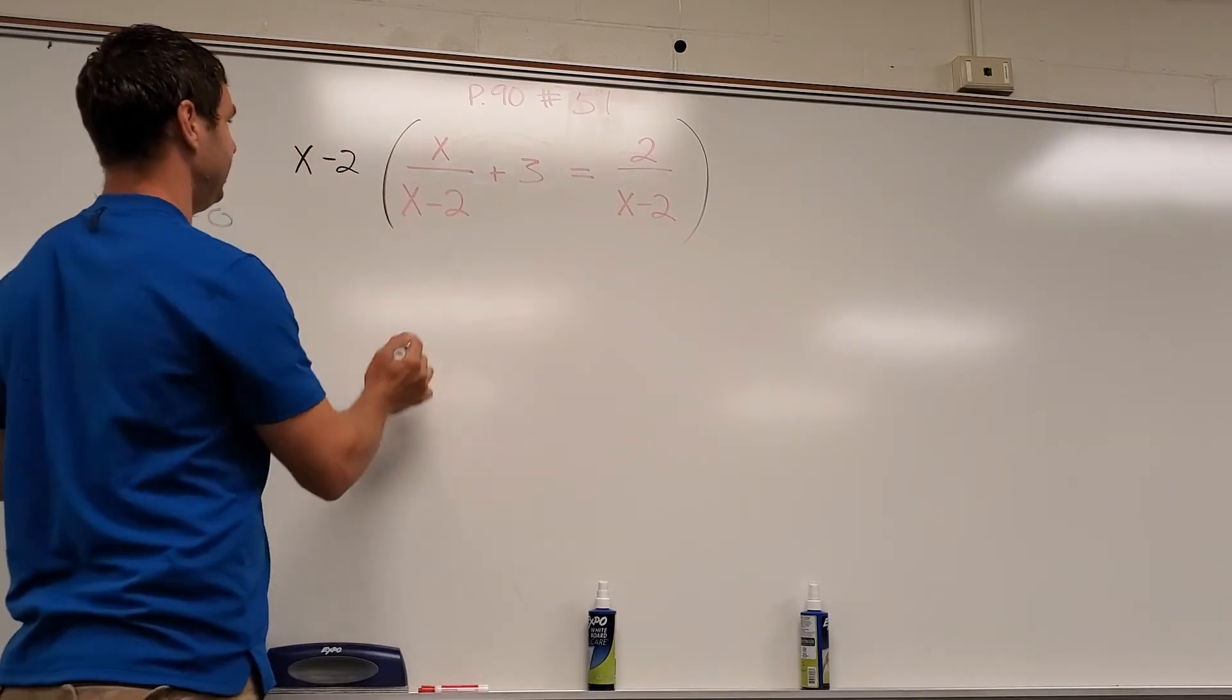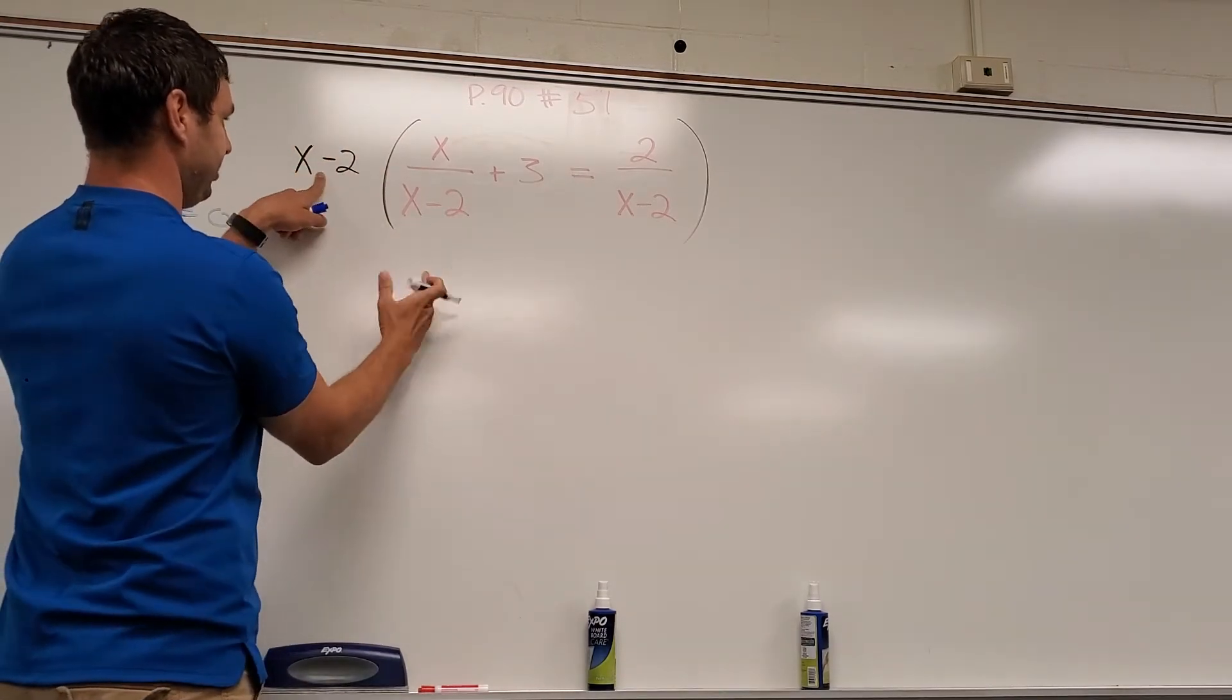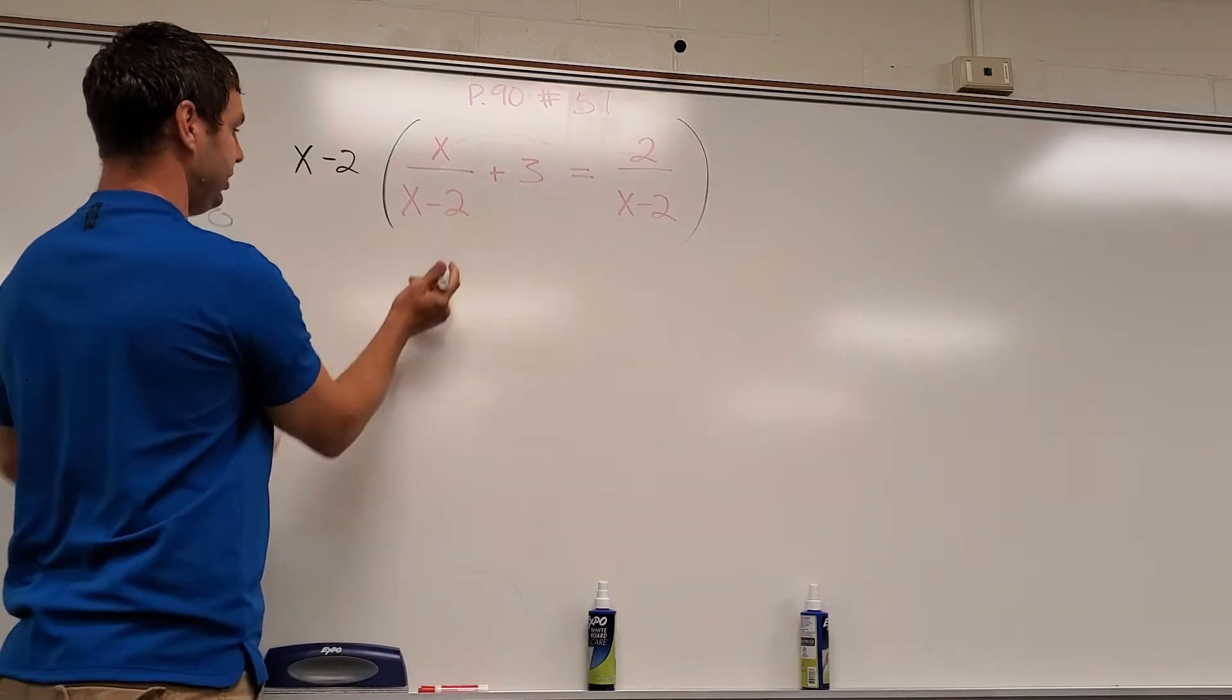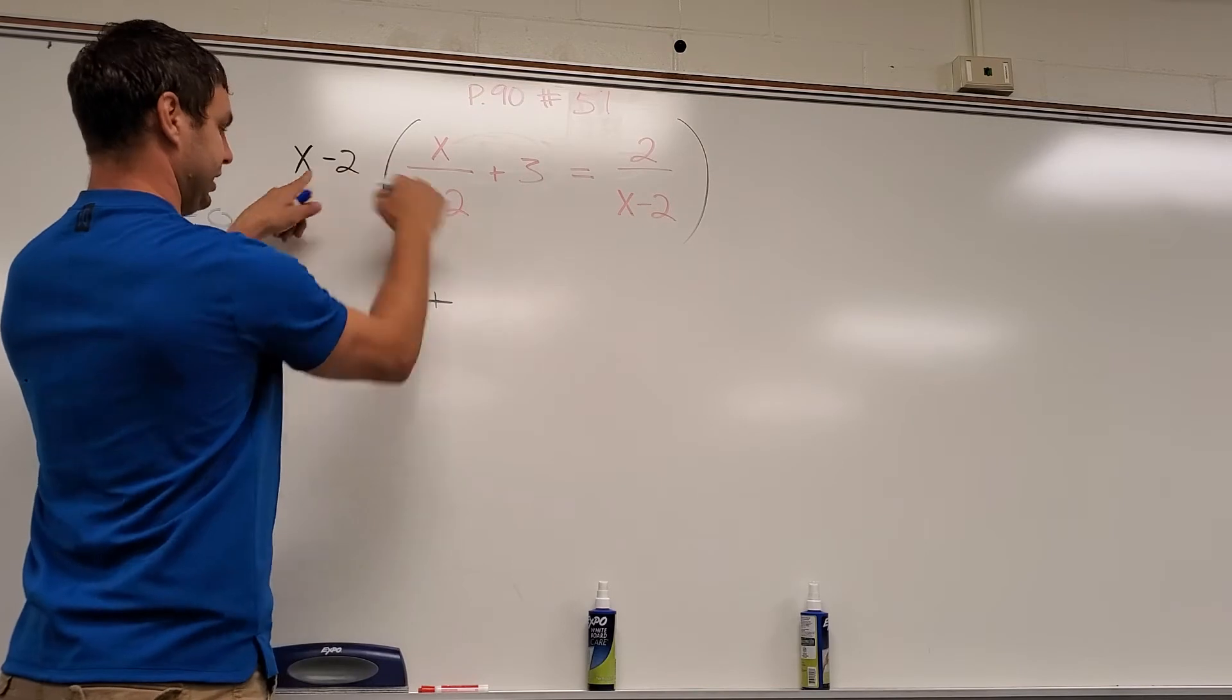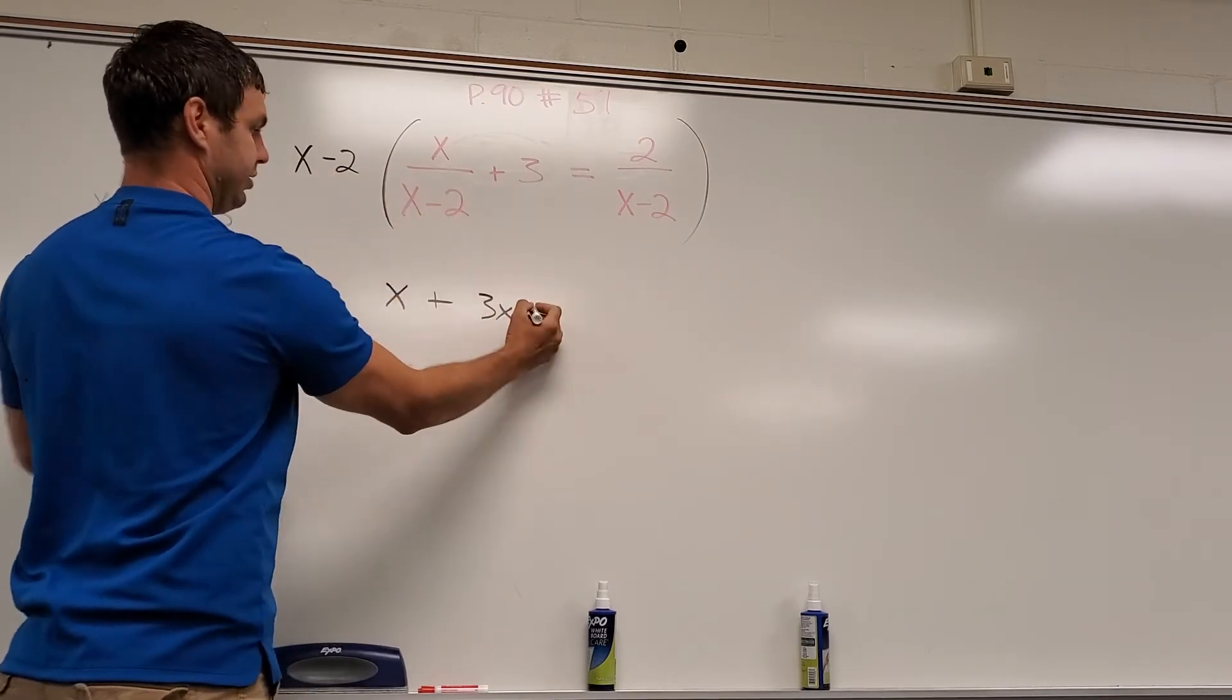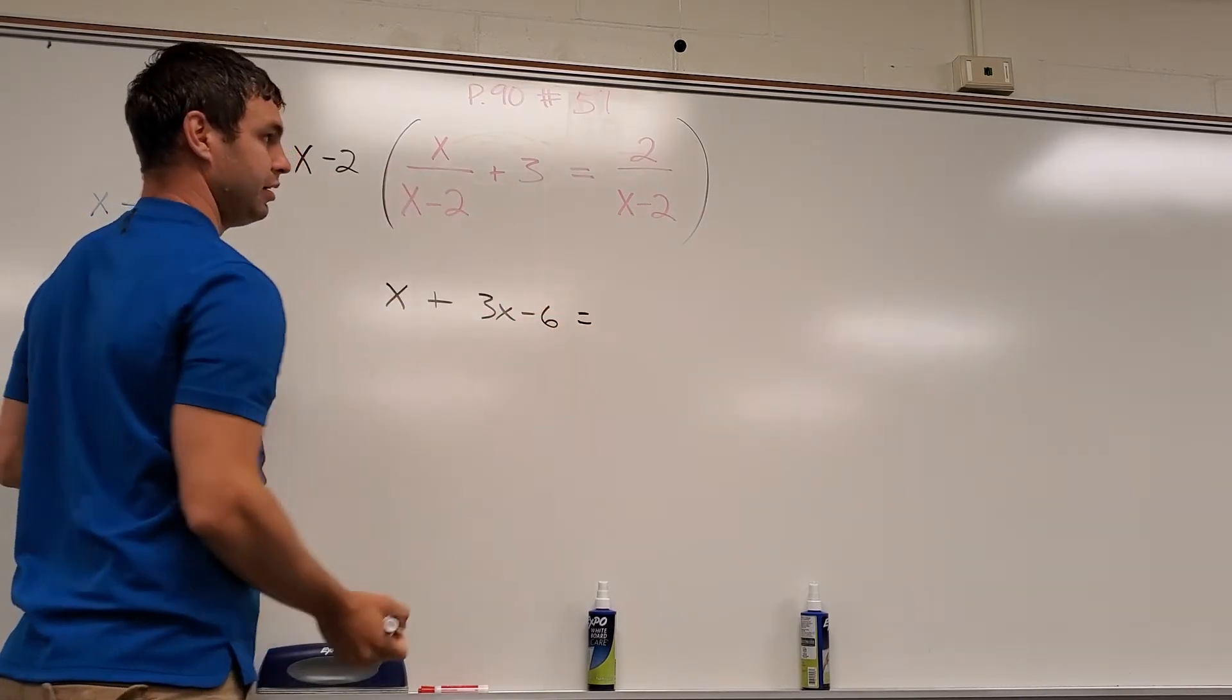Now what that's going to do is it's going to cancel the x minus 2 on the top and bottom of this one and just leave me with x plus, and then 3 times x minus 2 is going to be 3x. 3 times negative 2 is negative 6.